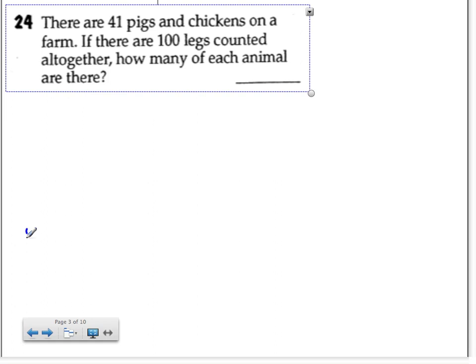Well, we'll say there's pigs and chickens and I know together there are 41 of them. So if I would have one pig, I would have to have 40 chickens because together there's 41.